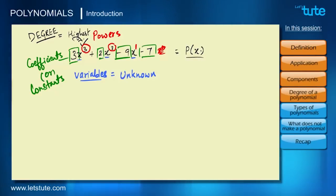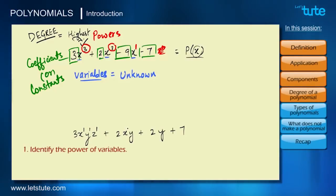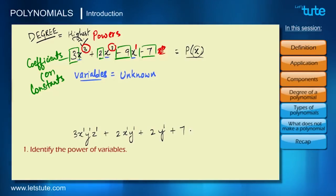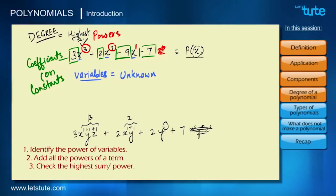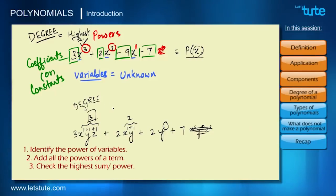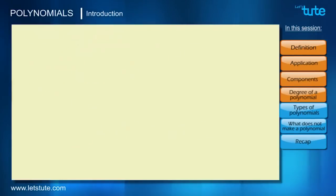What about polynomials with more than one variable? Step 1 is to identify the powers of all variables for every term. Some terms may have x⁰, y⁰, or z⁰, which we don't need to write. Step 2 is to add the powers for each term. We then check where the sum is highest — that highest sum is the degree of the polynomial with multiple variables.